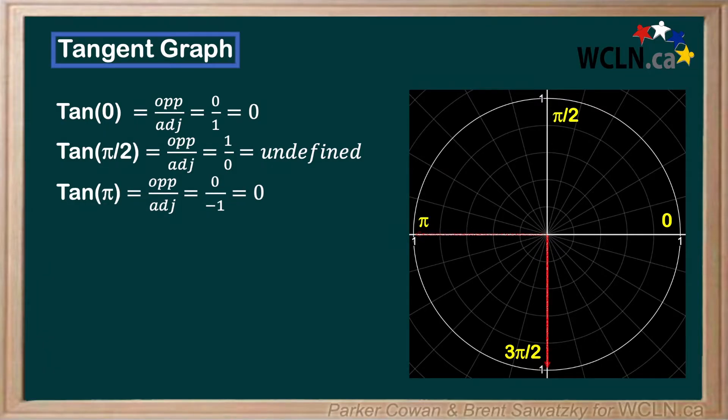Finally, we have tan of 3 pi over 2. And as expected, this point also does not exist, as our adjacent side is once again 0. This leaves us with a divide by 0 error.